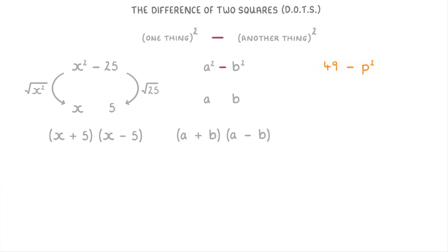Next up we have 49 minus p squared. In this case we need to notice that 49 is just 7 being squared and that p squared is just a p being squared. So we put the 7 and the p into our brackets as 7 plus p and 7 minus p.